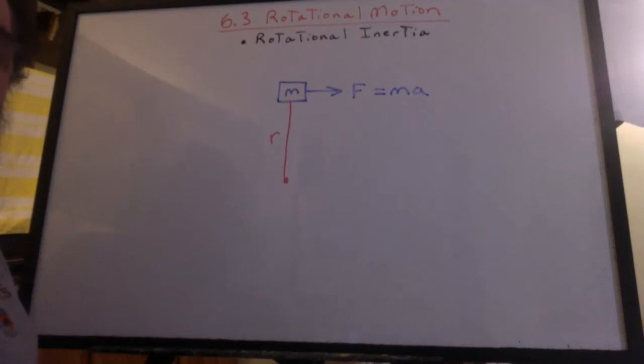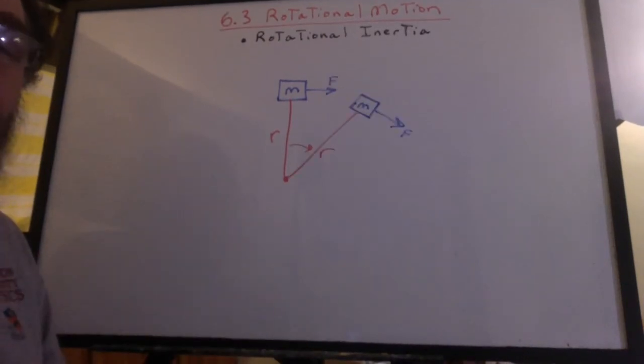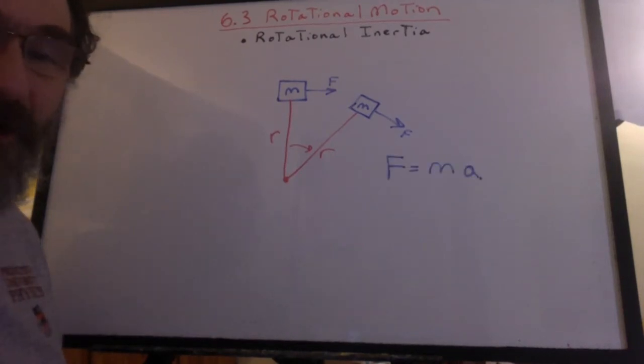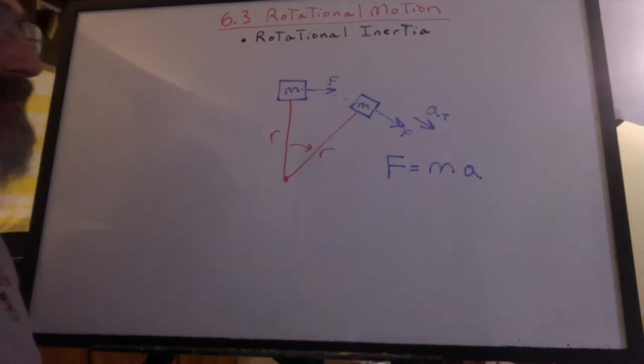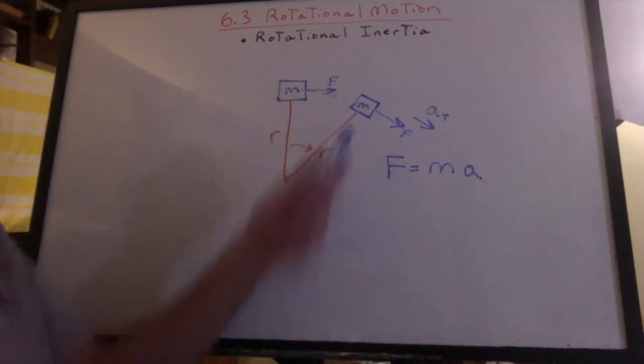Now imagine what would happen if that mass was on the end of a rod mounted on a pivot. That force will make the object rotate. F equals ma still works. But you have to think of the acceleration as being tangential to the circle.